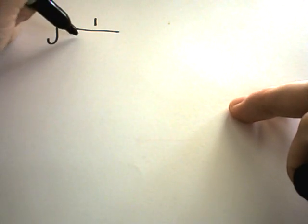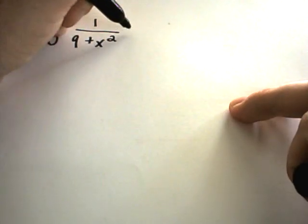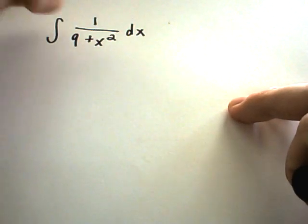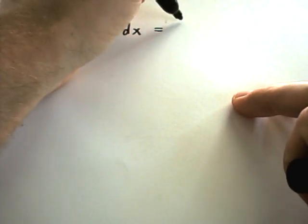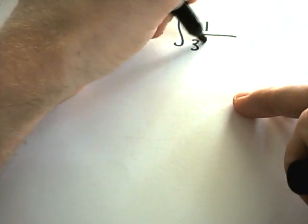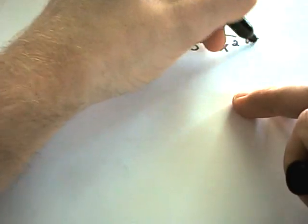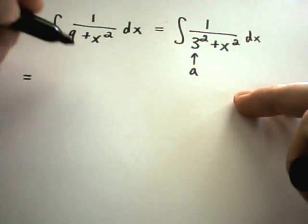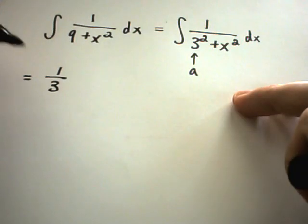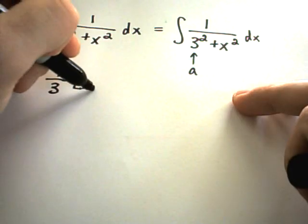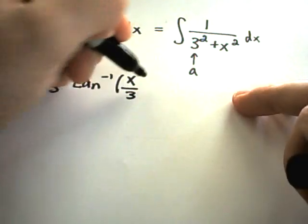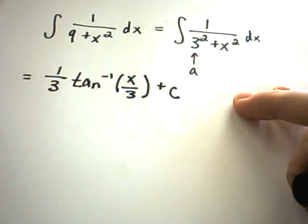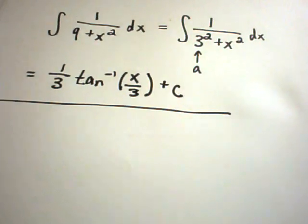So let's do some problems here with some integration. Suppose it was 1 over 9 plus x squared. Well this again is that arc tangent formula I was just showing you. You could rewrite this as 1 over 3 squared plus x squared. So now this is like the 3 is my a value from that other generic formula. And if you integrate it says you get 1 over the a value, which in this case is 3, arc tangent of x over 3 plus c. And that is your anti-derivative.